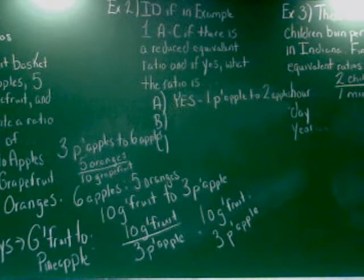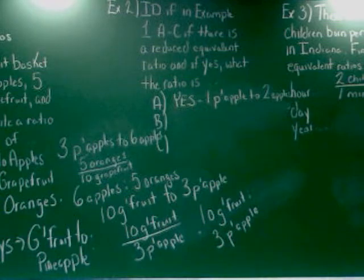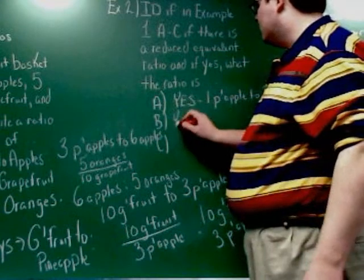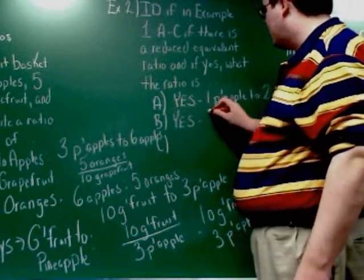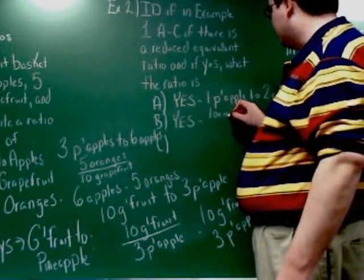Who knows? 5 over 10 reduces to what over what? It can't be reduced. Yes, it can. 5 over 10. 1 over 2. Exactly. I can rewrite it as 1 orange over 2 grapefruit.